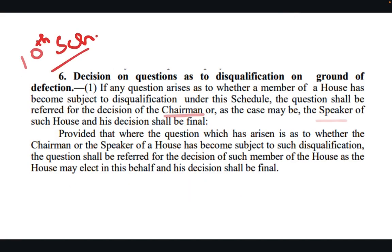Let's start with the legal provisions which are relevant for this. If you look at the 10th Schedule, paragraph 6, it basically tells us that on questions of disqualification on the ground of defection, who will be the authority to decide. Paragraph 6 clearly says that if any question arises as to whether an MP or MLA has undergone disqualification because of defection under the 10th Schedule, the question will be referred either to the Speaker or to the Chairman, depending on whether it is from Lok Sabha or Rajya Sabha. And the decision of the Speaker or Chairman shall be final.